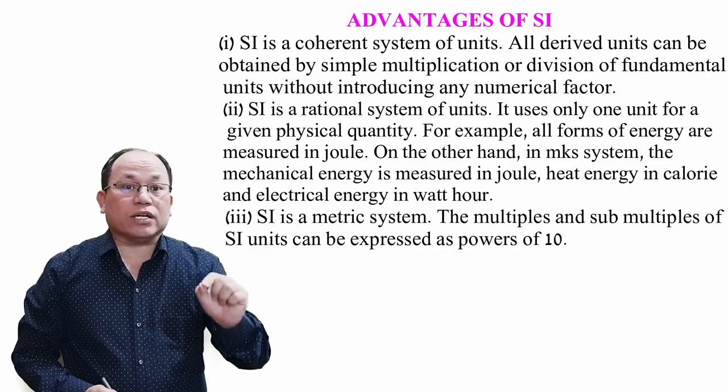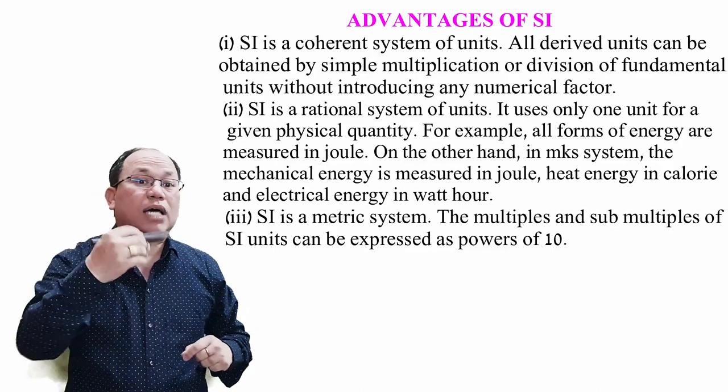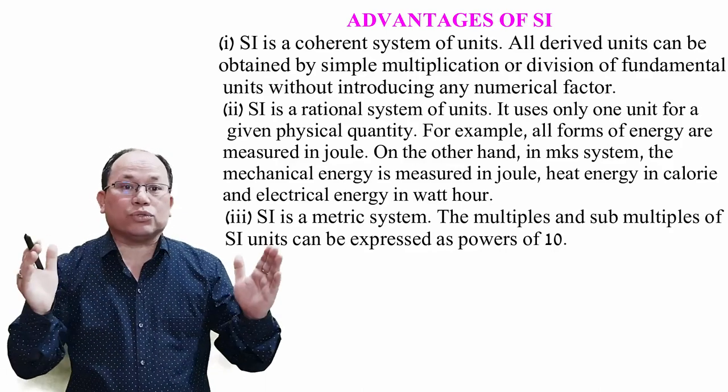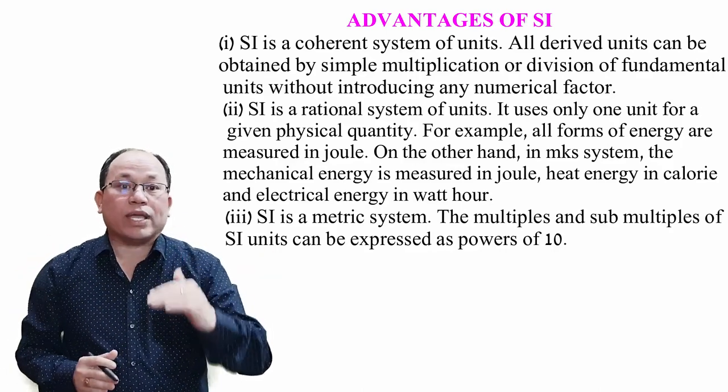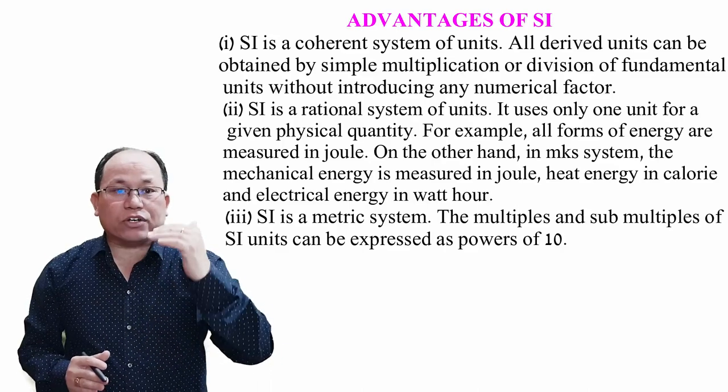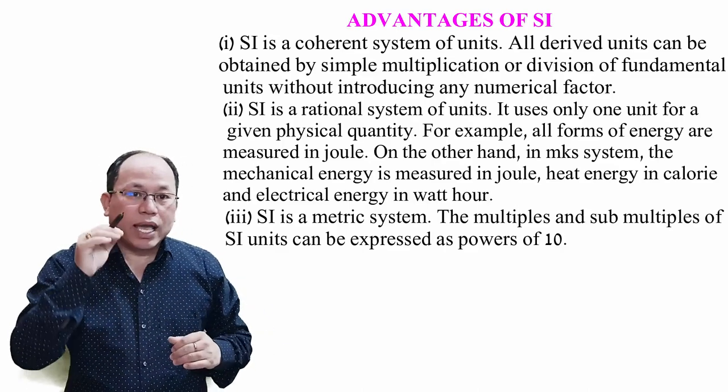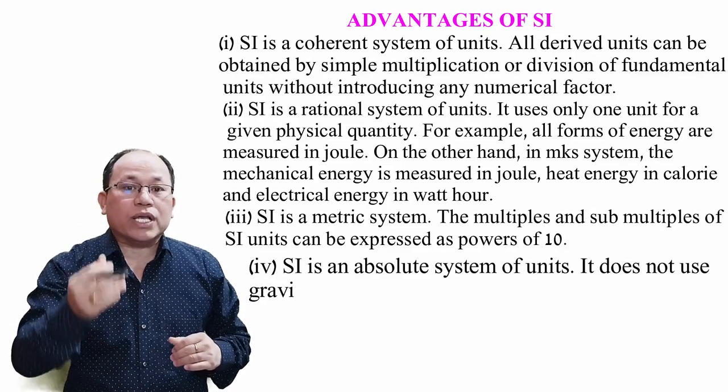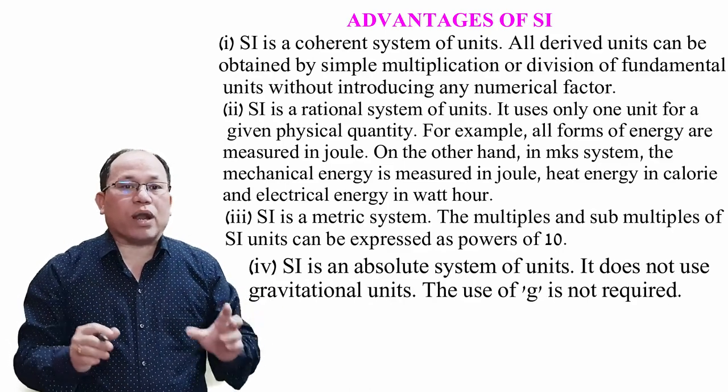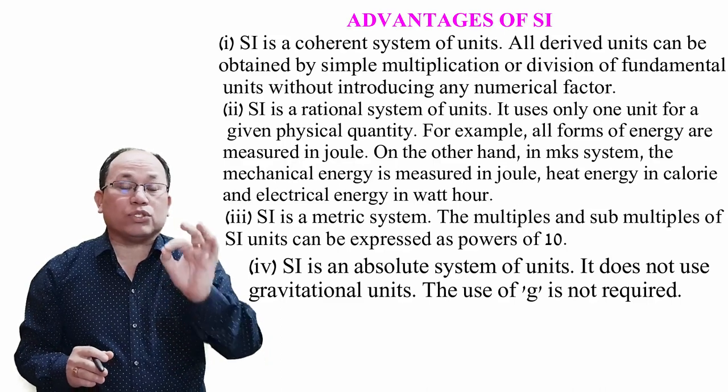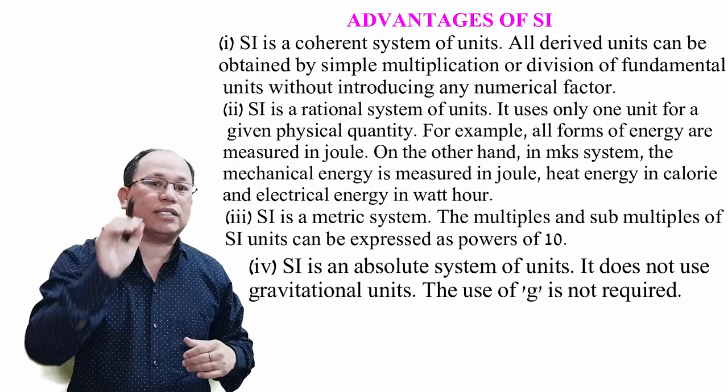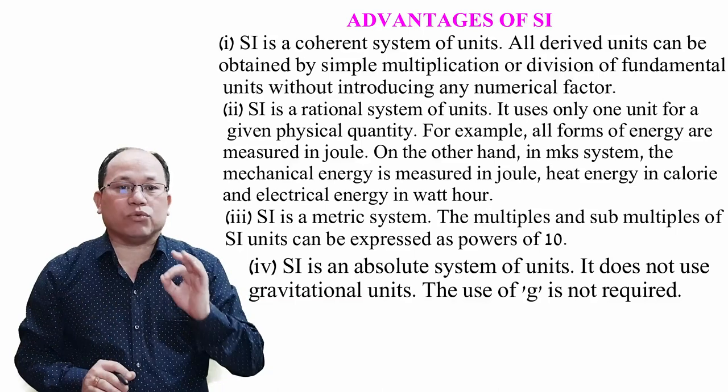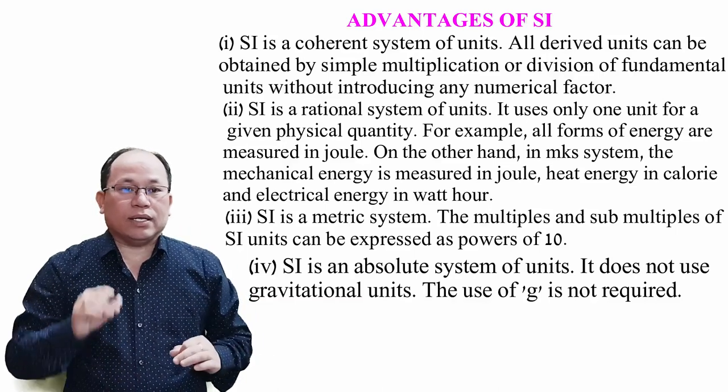Like speed of light, 3 times 10 to the power 8. That's why SI is also known as metric system. Next point, SI is an absolute system of units. It does not use gravitational units, the use of G is not required.